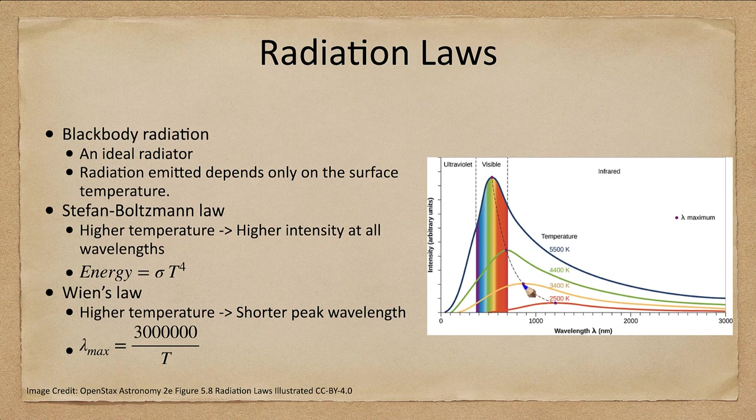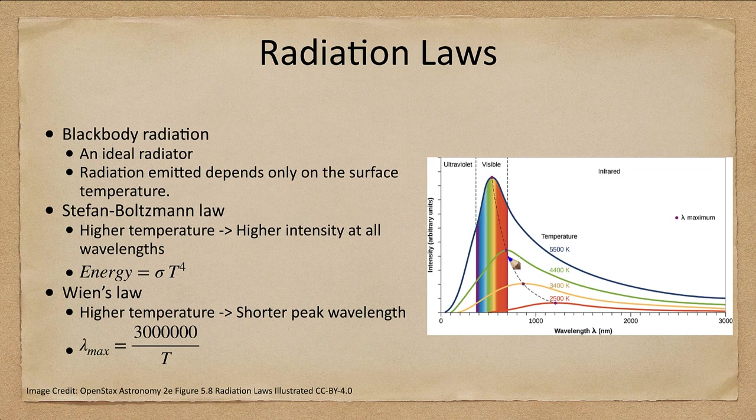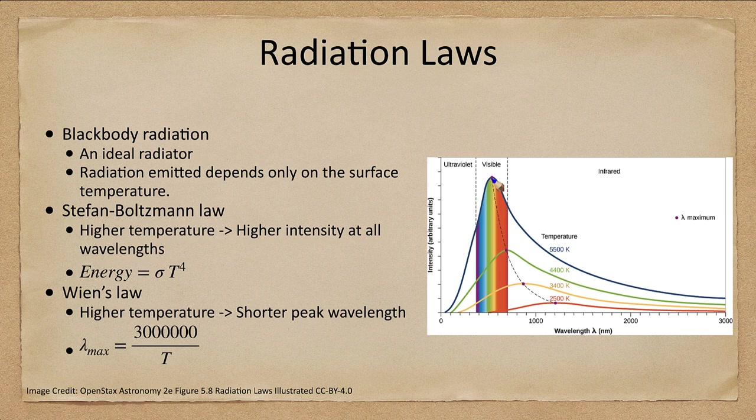The peak at 2,500 degrees is way out in the infrared. At 3,400, it's getting closer to the visible. At 4,400, it's in the infrared. And at 5,500, it's right in the middle of the visible.